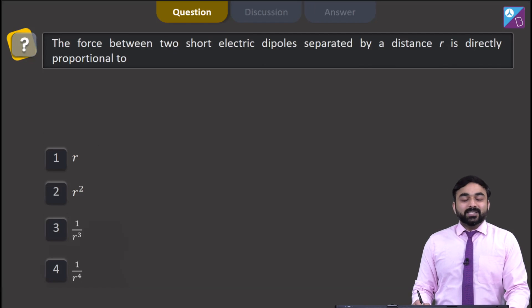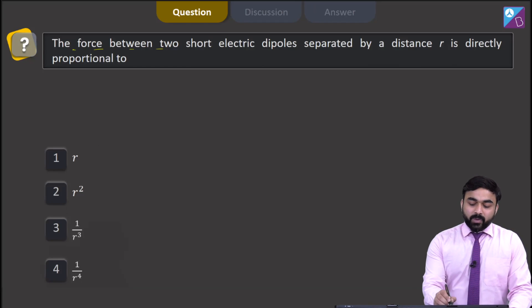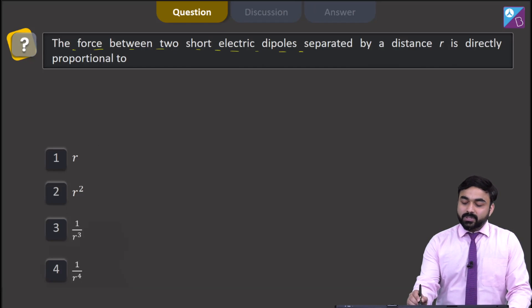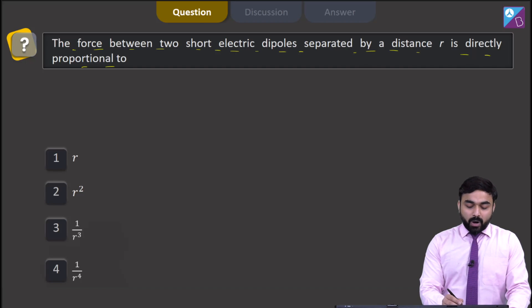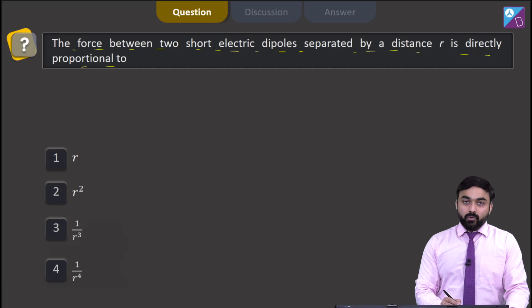Hello dear students, let us check out this particular question now. In this question, the force between two short electric dipoles separated by a distance r is directly proportional to r, r square, 1 by r cube, or 1 by r to the power 4.